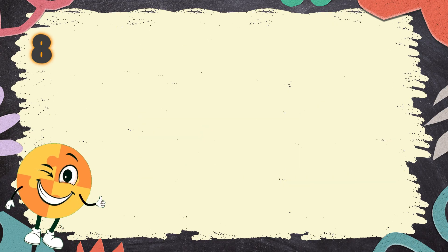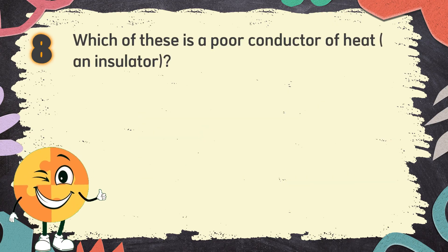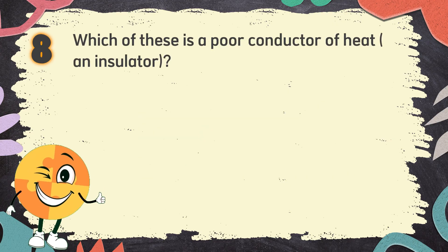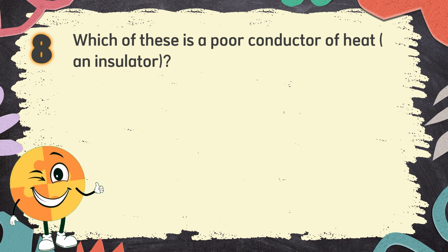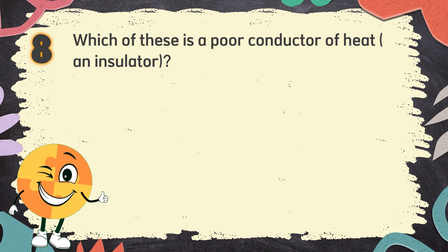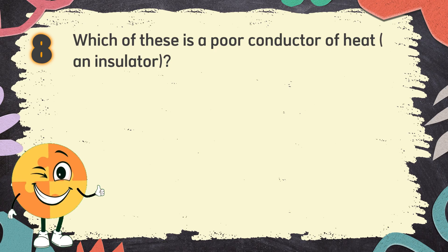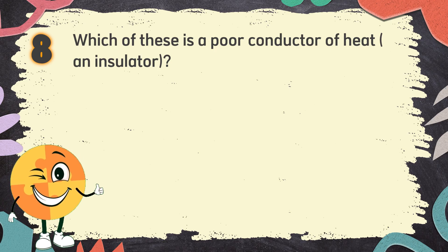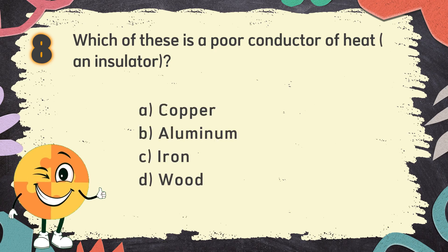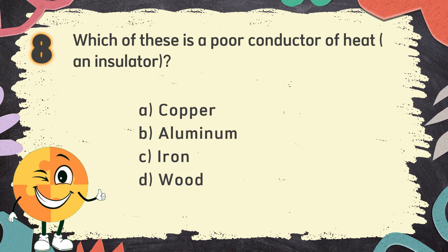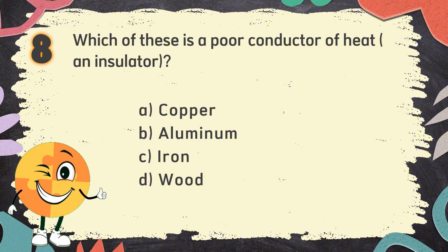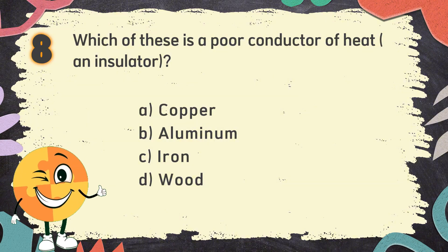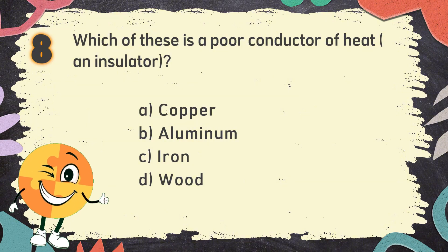Number 8. Which of these is a poor conductor of heat and an insulator? The choices are: A. Copper, B. Aluminum, C. Iron, D. Wood.